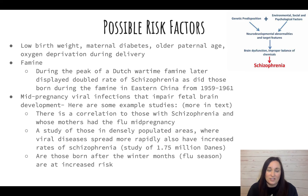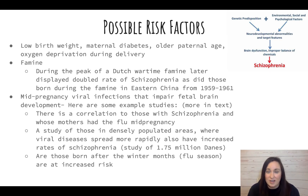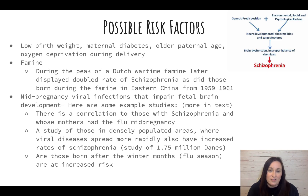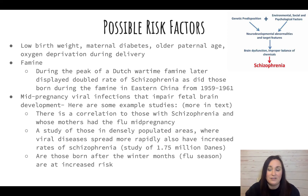Some possible risk factors and correlations include low birth weight, maternal diabetes, old paternal age, oxygen deprivation at birth, and famine — several studies link periods of famine to increased rates of babies born with schizophrenia. A key factor shown in many studies is the mother having a viral infection such as the flu during mid-pregnancy, which seems to impair fetal brain development and possibly cause some of those brain abnormalities.